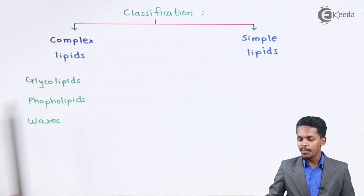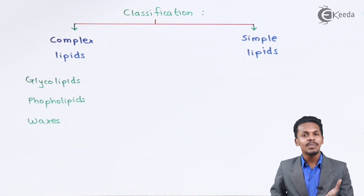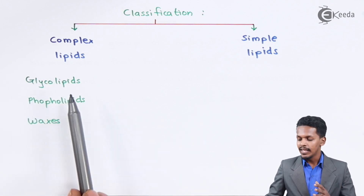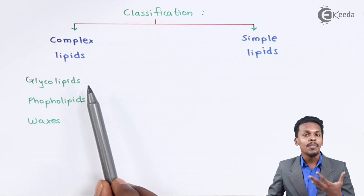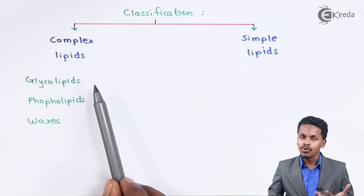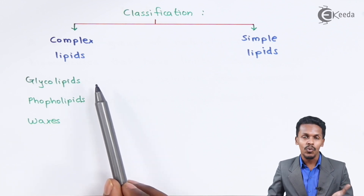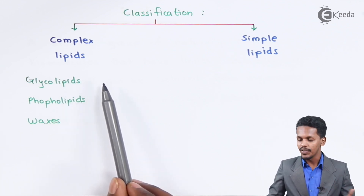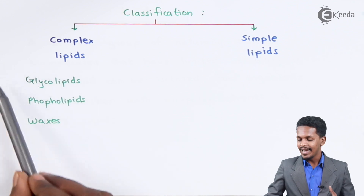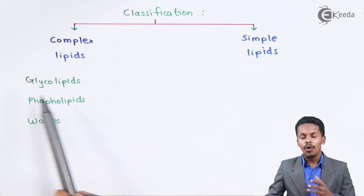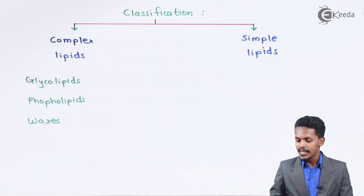Talking about glycolipids: in this case the lipid is combined with a sugar molecule, for example glucose or galactose, and in that way they form glycolipids.